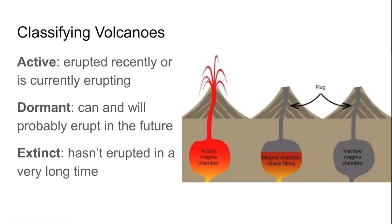Before we can predict when volcanoes might erupt, we should classify them based on their potential to erupt, which is characterized by the status of the magma chamber. If the chamber is full and magma is moving up the conduit, we say the volcano is active — it has either erupted recently or is currently erupting. Volcanoes are dormant if their magma chamber is in the process of filling up, meaning they can and potentially will erupt in the future. Finally, extinct volcanoes have exhausted their magma chamber and don't have the potential to fill up again, so they will very likely not erupt — we just see them as mountains.